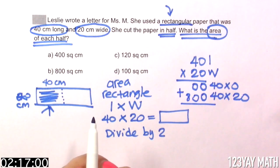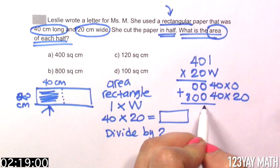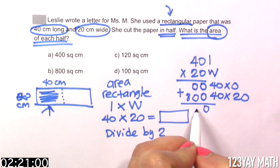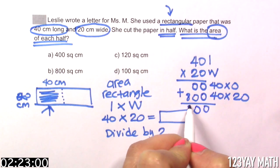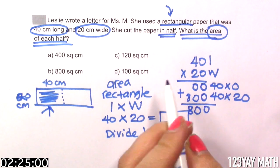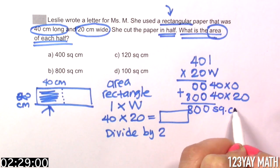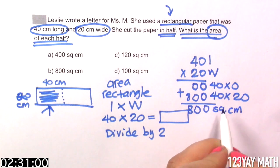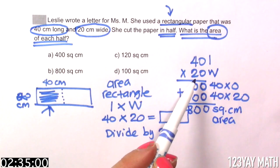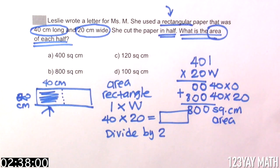Now we're going to add these numbers up. 0 plus 0 is 0. 0 plus 0 is 0. And 8. So the answer is 800 square centimeters. This is the area, because we did length times width. Is this the final answer?